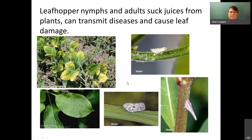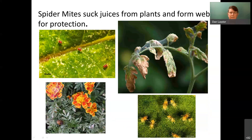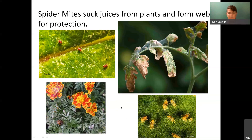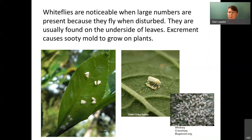Spider mites are not insects but are common pests found on the underside of leaves. On heavily infested plants like tomatoes, they make protective webs. Hosing the undersides of leaves every few days disrupts their life cycle and is an effective control. Whiteflies are also common — they fly off when the plant is disturbed, feed on leaf undersides by sucking plant juices, and produce honeydew that leads to sooty mold as well.